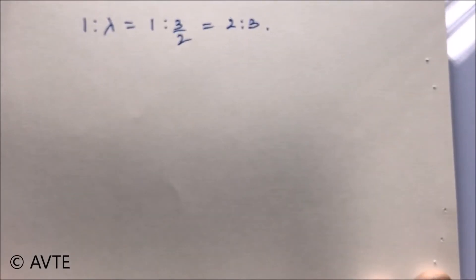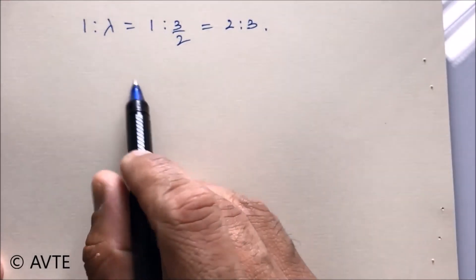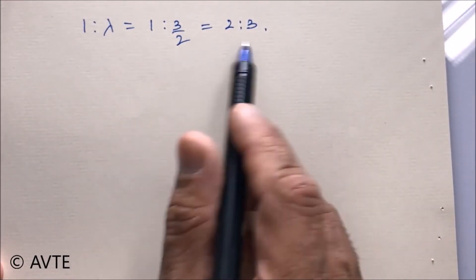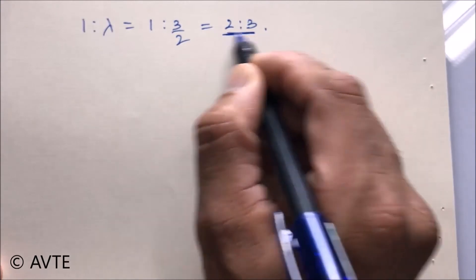Now, when you take lambda as 3 by 2, the ratio becomes 1 is to lambda. That is, 1 is to 3 by 2, which is 2 is to 3. So the ratio becomes 2 is to 3.